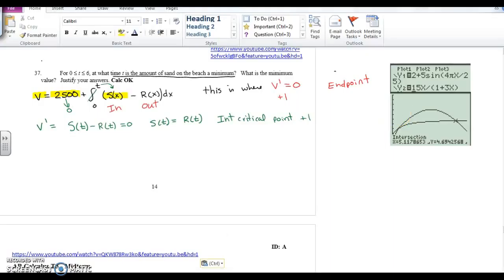To find where the derivative is equal to zero, I added RT to both sides so that I could find the intersection of the two rates, the in and the out rate.